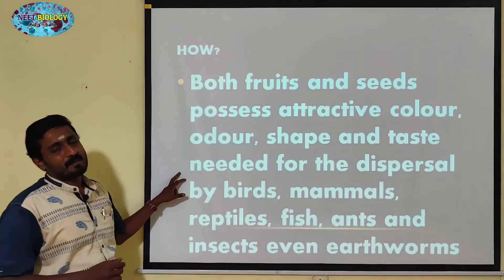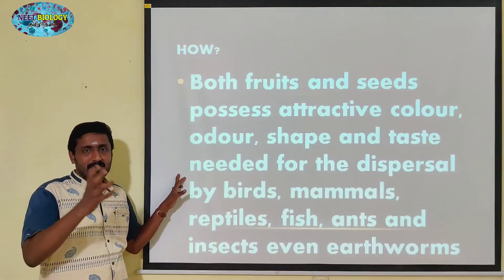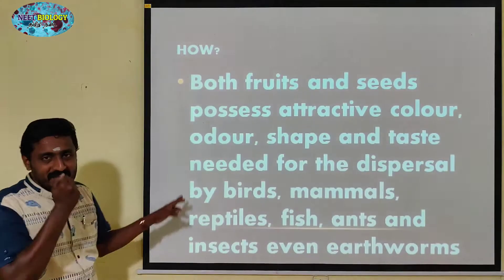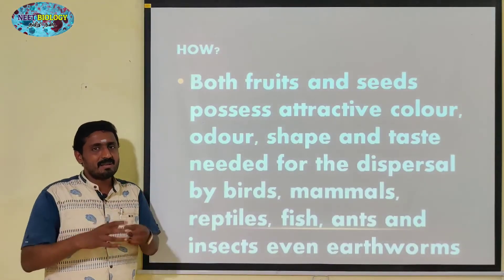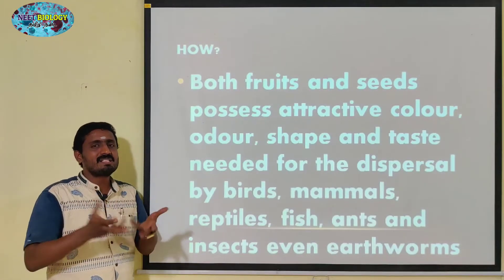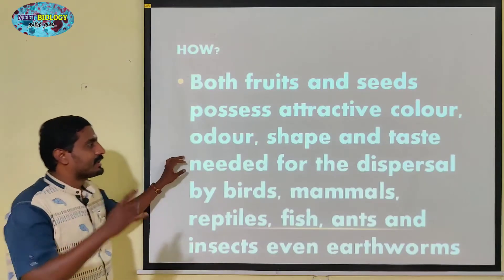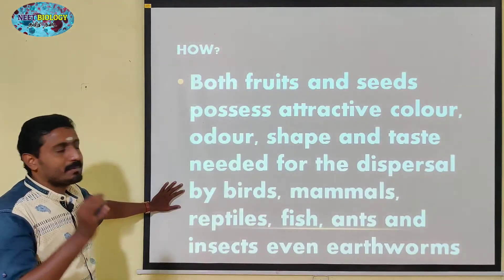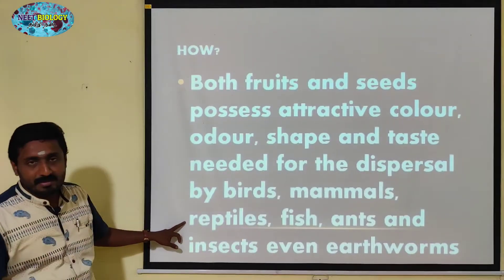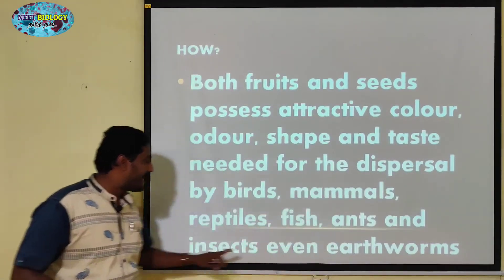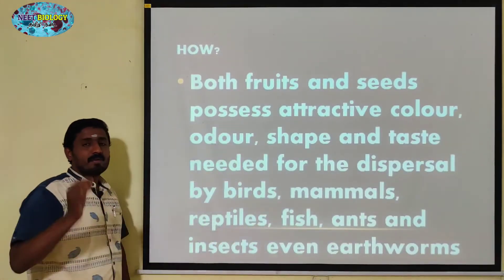Taste is available. If you have a taste, you can see a seed. In the same way, you can see a seed — Animal set. Dispersal by birds, mammals, reptiles, fish, ants, insects. The fruit and seeds are colored. The odor is a good product. The shape is a good product.